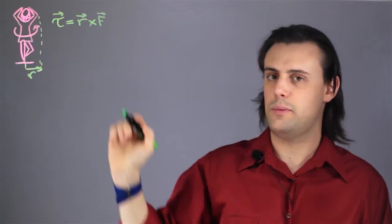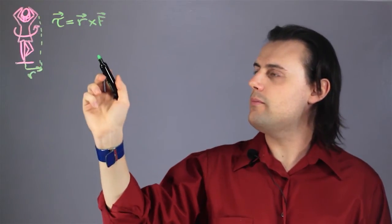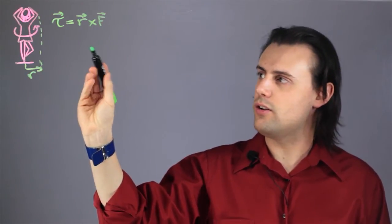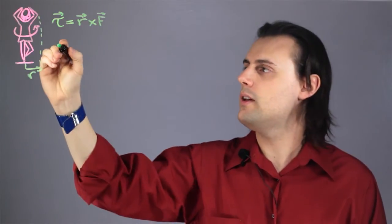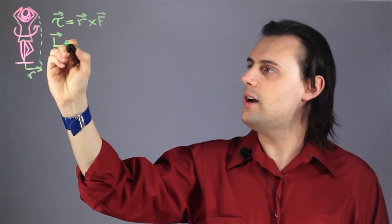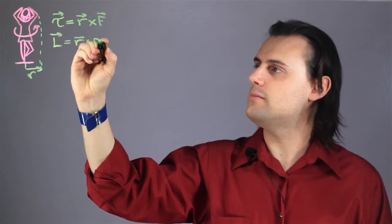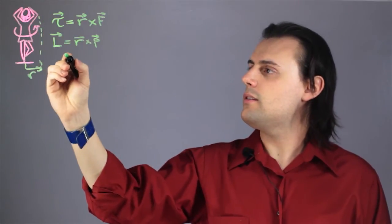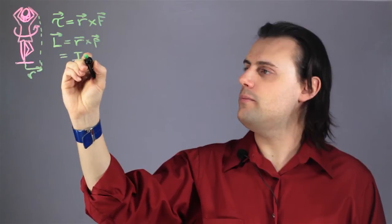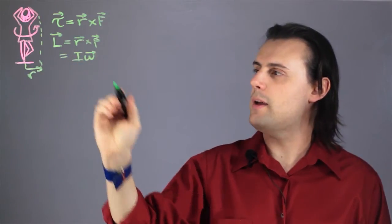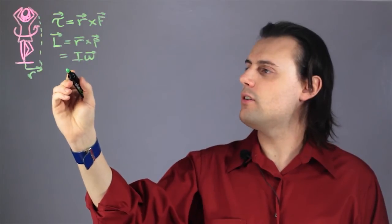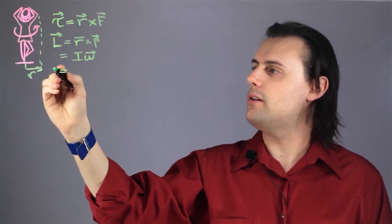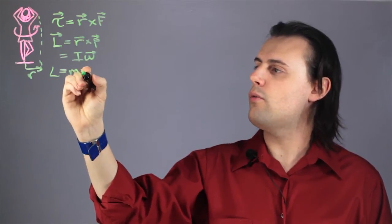Once she's spinning there is no net force, and we can see this manifested in the conservation of angular momentum. Angular momentum is defined as R cross P, where P is the momentum of her mass as she's spinning. This can be written in terms of her rotational inertia times her angular velocity omega, where her inertia is proportional to her mass and radius squared — so we write angular momentum as MR²ω.